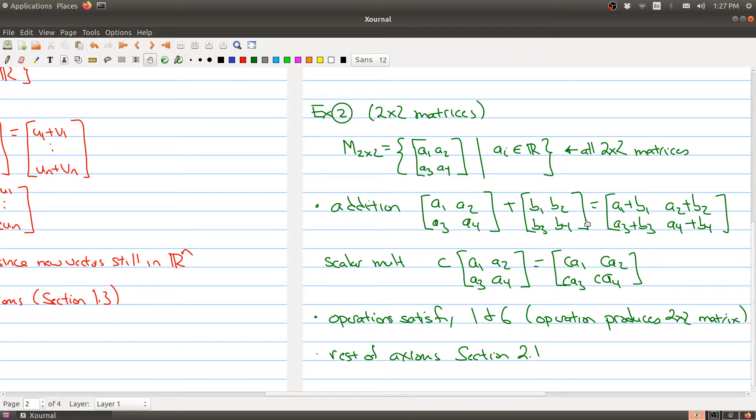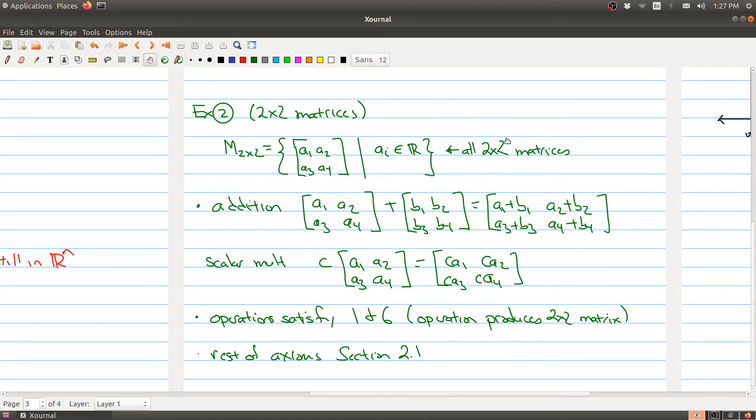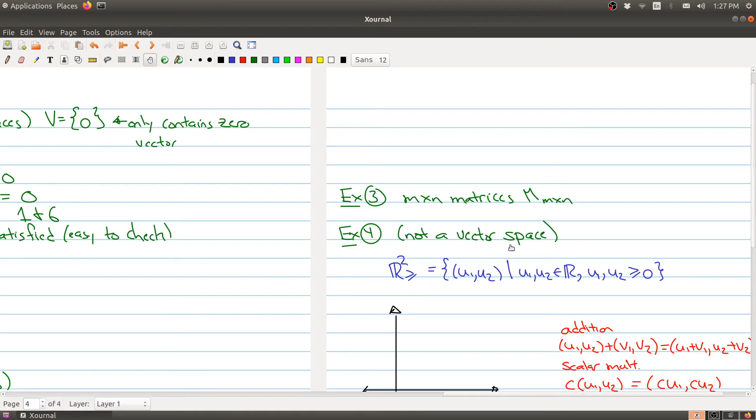Now as you're looking at this, you should notice something here—that we're not really using anything specific about two by two matrices. In fact, if I had instead used an M by N matrix, everything here would still be true, including what's in section 2.1. So as our third example, if you take the collection of all matrices that are M by N, that is also going to be a vector space.